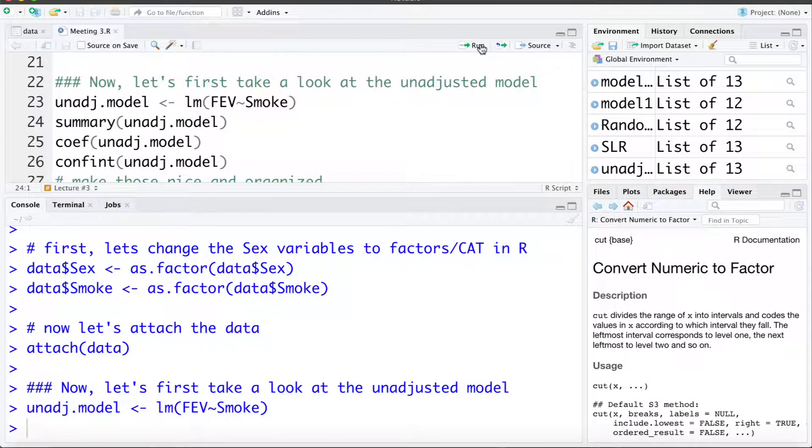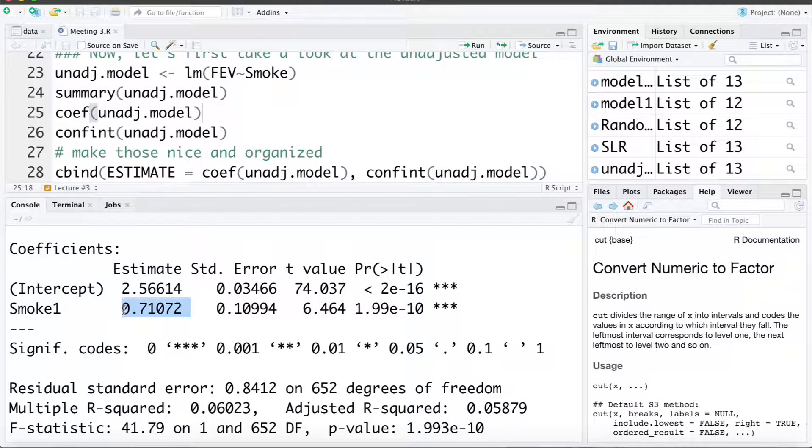We can look at a summary of the model. So this smoking coefficient here of 0.71, the interpretation would be that for a smoker we'd expect the mean lung capacity to be 0.71 liters larger than a non-smoker. Now that's clearly a very biased estimate and we explored conceptually why that might be happening.